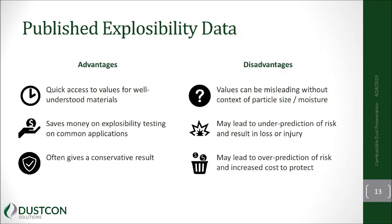Using published data has both advantages and disadvantages. The advantages: it's a quick reference — you can look up KST and Pmax values, which is really useful for those designing explosion protection systems. Pneumatic conveyor companies, silo manufacturers, and explosion protection firms doing vent area or suppression calculations rely on these as a quick reference, especially for common materials like sugar or grain dust. It also saves money on testing, and most published values tend to be relatively conservative, meaning you'll likely be over-protecting.